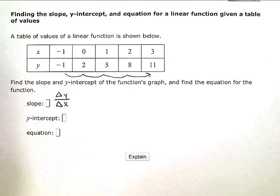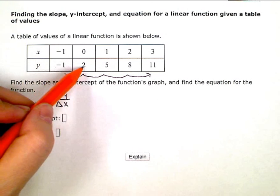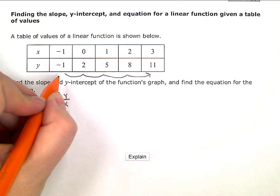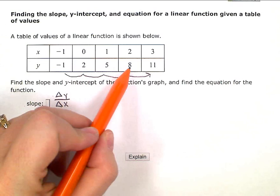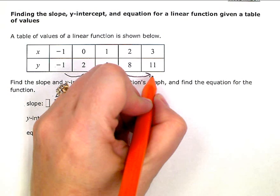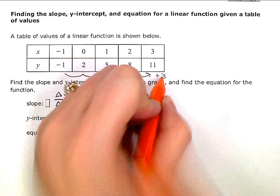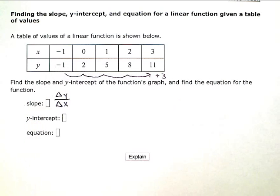Okay, so from negative 1 to 2, that would be add 3. And from 2 to 5 is add 3, and 5 to 8 we add 3, and 8 to 11 we add 3. So the change in y, or the pattern there, is add 3, or plus 3.